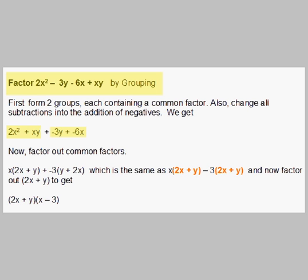Now factor out the common factors. In that first group we can factor an x out and we get x(2x + y). In the second group we can factor a -3 out and we get -3(y + 2x), because -3 times y is -3y and -3 times 2x is -6x.